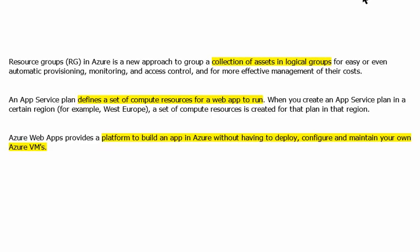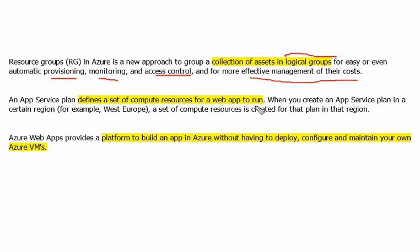Let's first understand some definitions. A resource group in Azure is a new approach to group a collection of assets in logical groups for easy or automatic provisioning, monitoring, access control, and more effective management of their cost. An app service plan defines a set of compute resources for a web app to run.